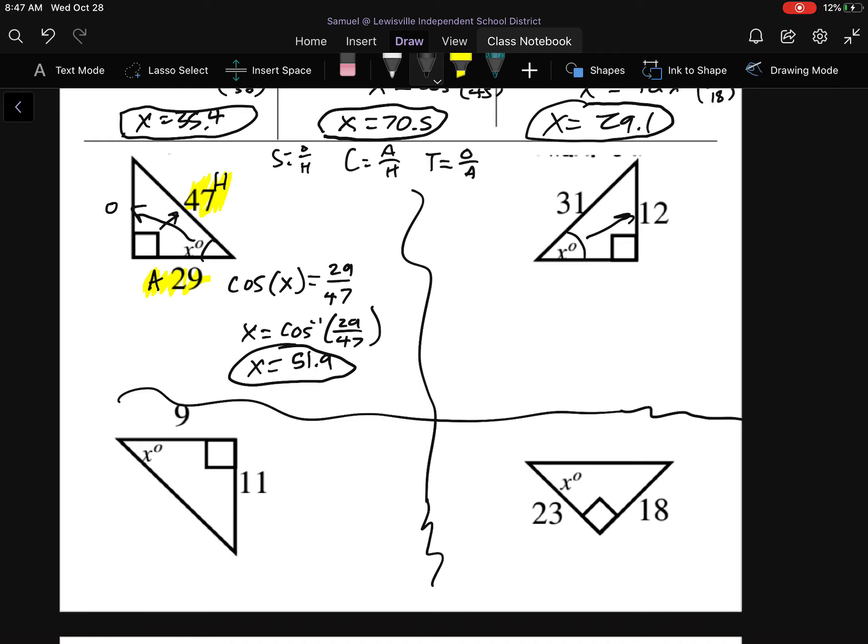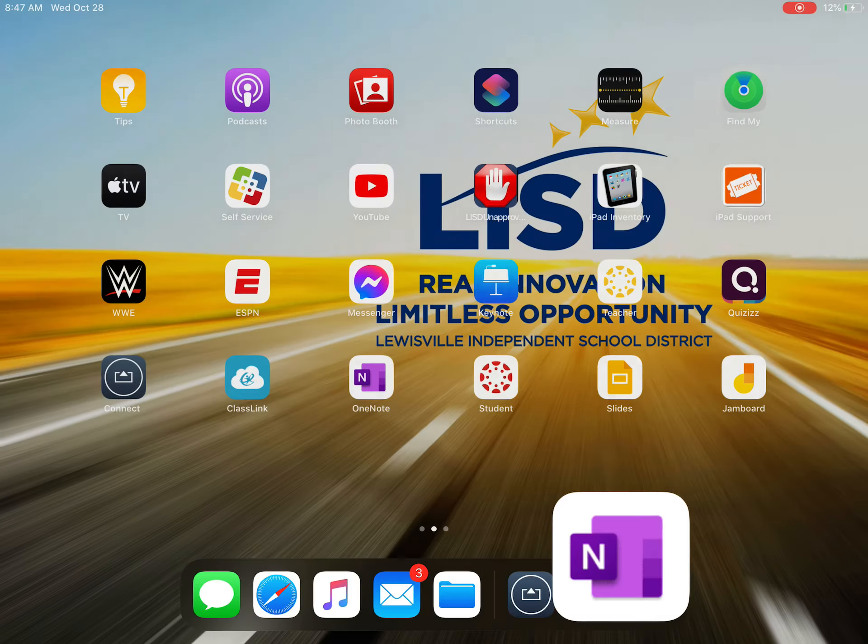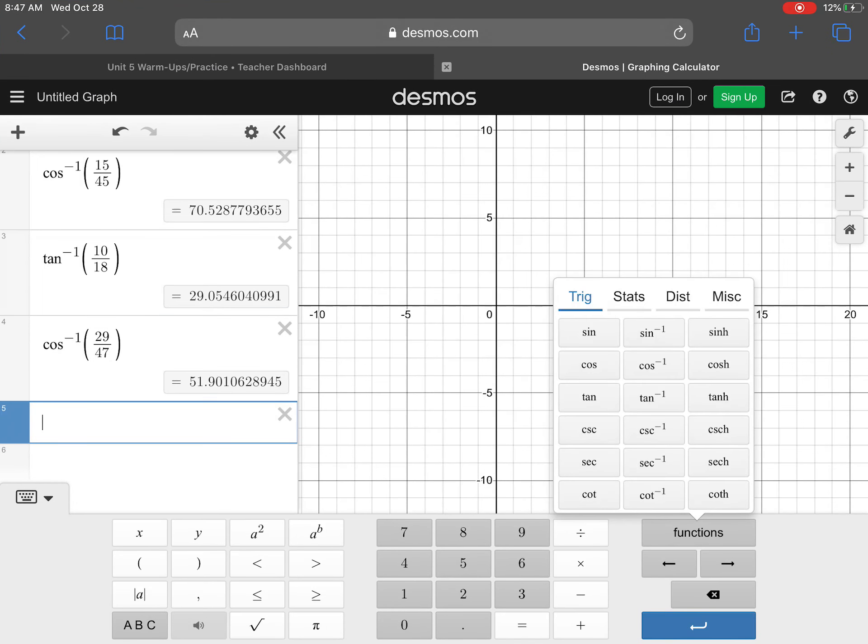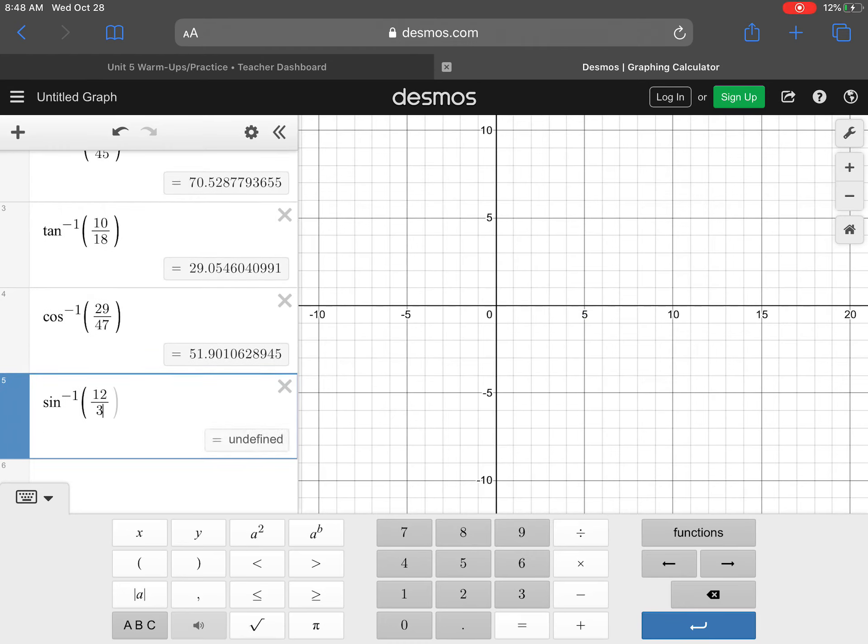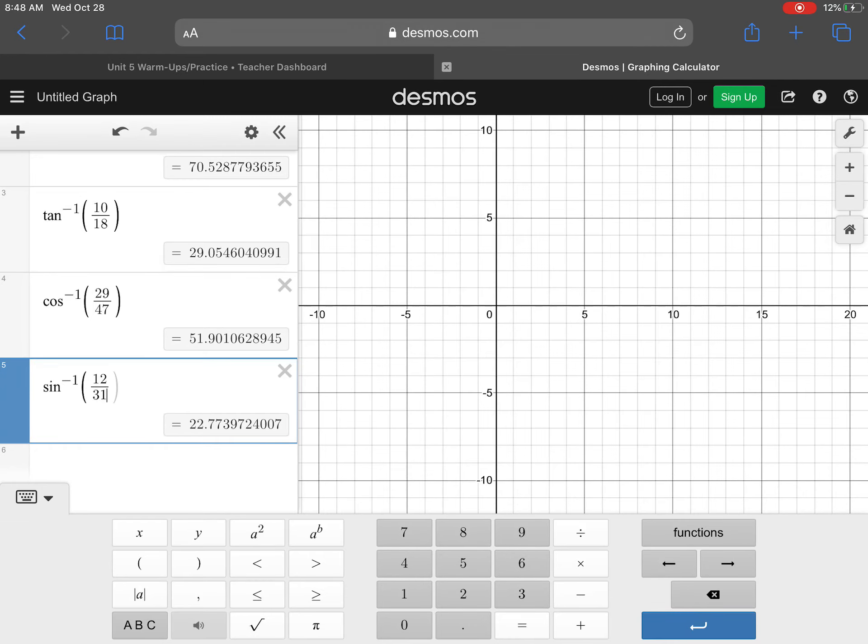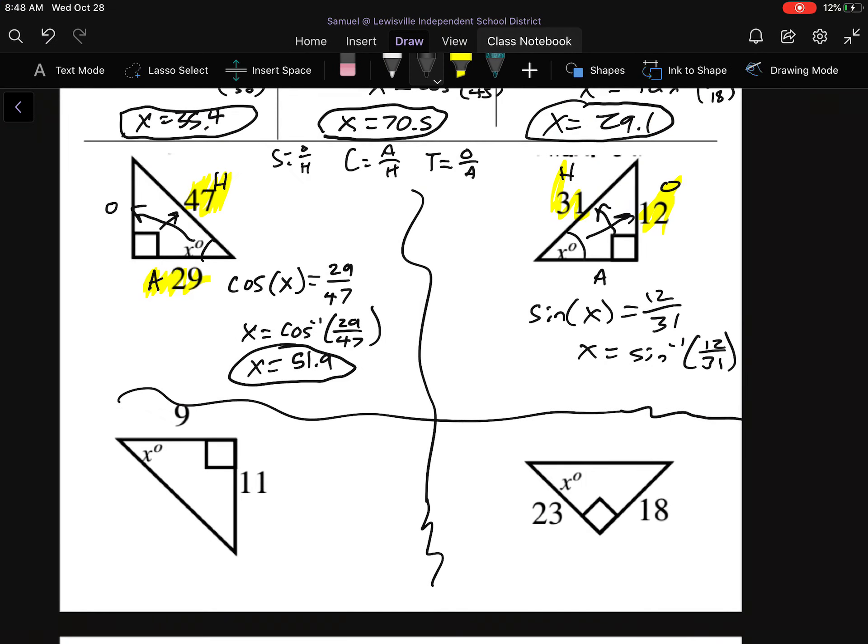Hopefully you paused. I'm going to go quickly through these. This should have been O. This was H. This was A. If what we have is O and H, then we should have been using sine. Sine of X is equal to 12 over 31. That means that X is going to be inverse sine of 12 over 31. Inverse sine 12 over 31, that's giving me 22.8. So X is equal to 22.8.